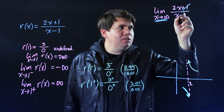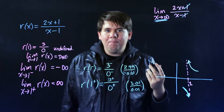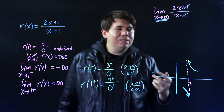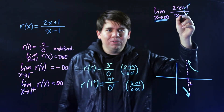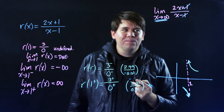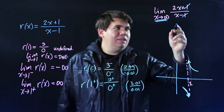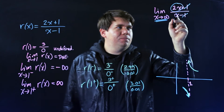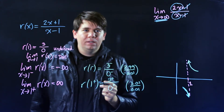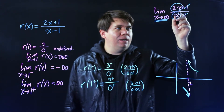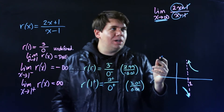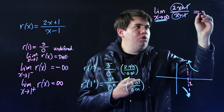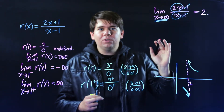When x is going to infinity, those plus one and minus one don't really matter. If you have two billion dollars, you don't get excited about finding or losing a dollar. So when going to infinity, all that matters are the leading terms — you'd have 2 times a billion over a billion, which is essentially just 2.